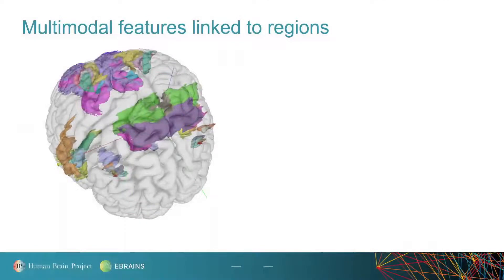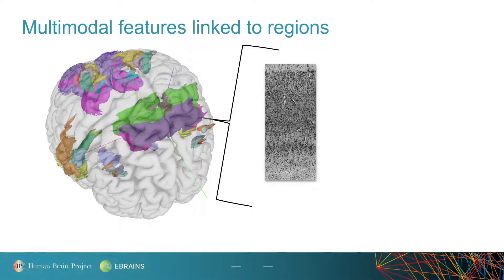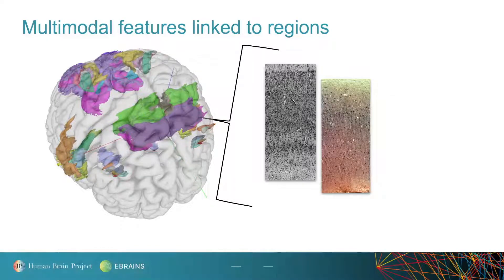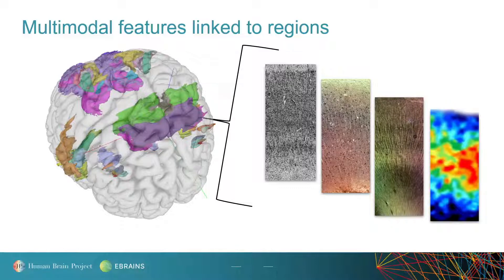The atlas gives you access to a growing selection of multimodal data features that are linked to brain regions. These describe different regional aspects of brain structure and function, including densities of cells, fibers, neurotransmitter receptors, connectivity profiles, functional activations, physiological recordings, and more.